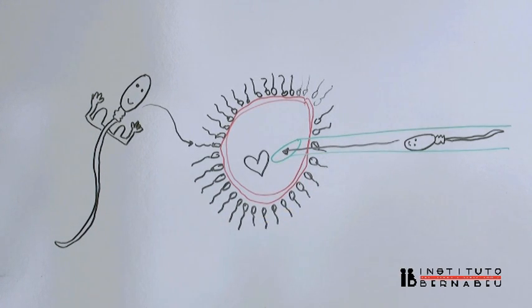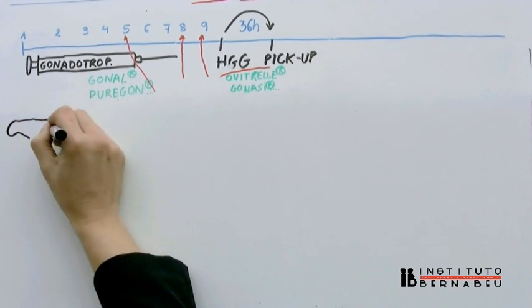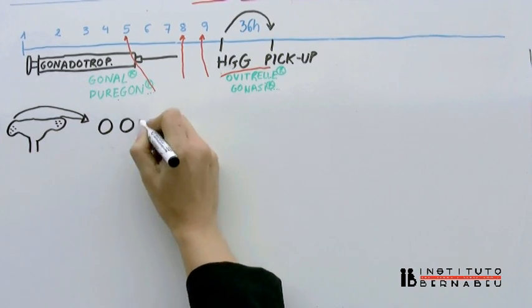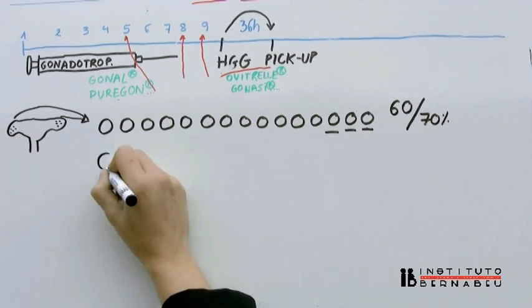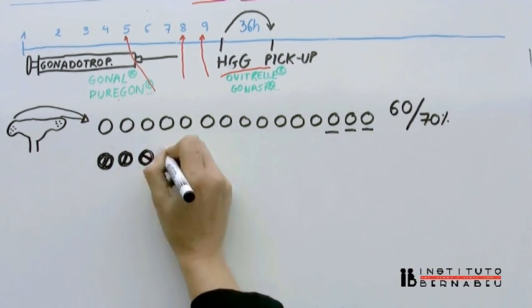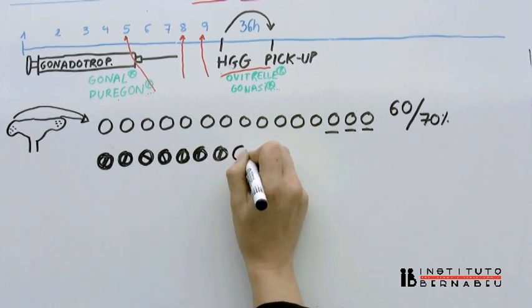We also know that just as it happens in nature, only 60-70% of eggs retrieved are normal and mature. Only 60-70% of these are fertilized. Not all fertilized embryos develop normally.